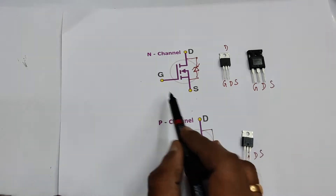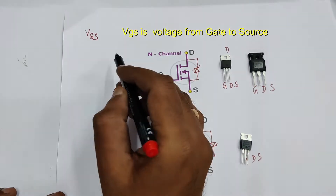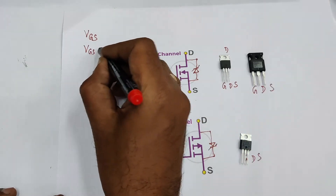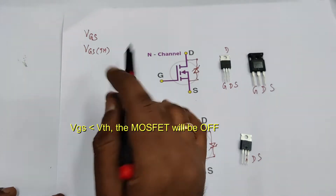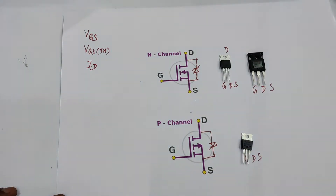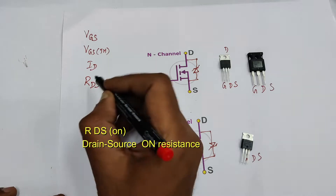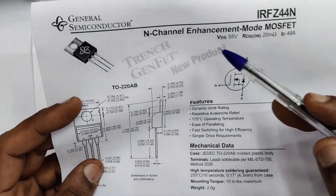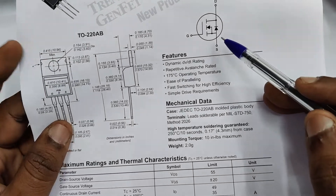Now let us check the specifications. The first is VGS — gate source voltage — with a maximum of 10V. Next is the VGS threshold, which is the threshold voltage. When VGS is less than this threshold voltage, the MOSFET is always off. Then there is ID — the drain current. The most important is RDS(on) — the drain-source ON resistance. All these MOSFETs have very low RDS, which is why they can handle huge current.